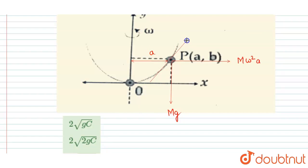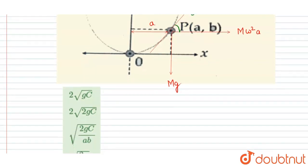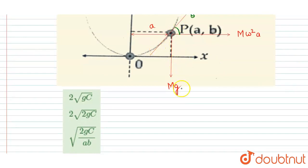If we draw a tangent along this curve, there is no net force along the wire (tangent direction). Let theta be the angle made by the tangent with the horizontal. Since there is no net force along the wire, we write: m·omega²·a·cos(theta) = mg·sin(theta), because the complementary angle is (90° - theta).